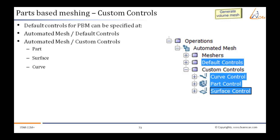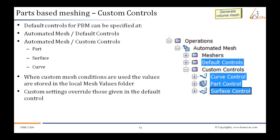The custom controls can be given for part, surface, and curve. When custom mesh conditions are used, the values are stored in the local mesh values folder. Custom settings override those given in the default control.